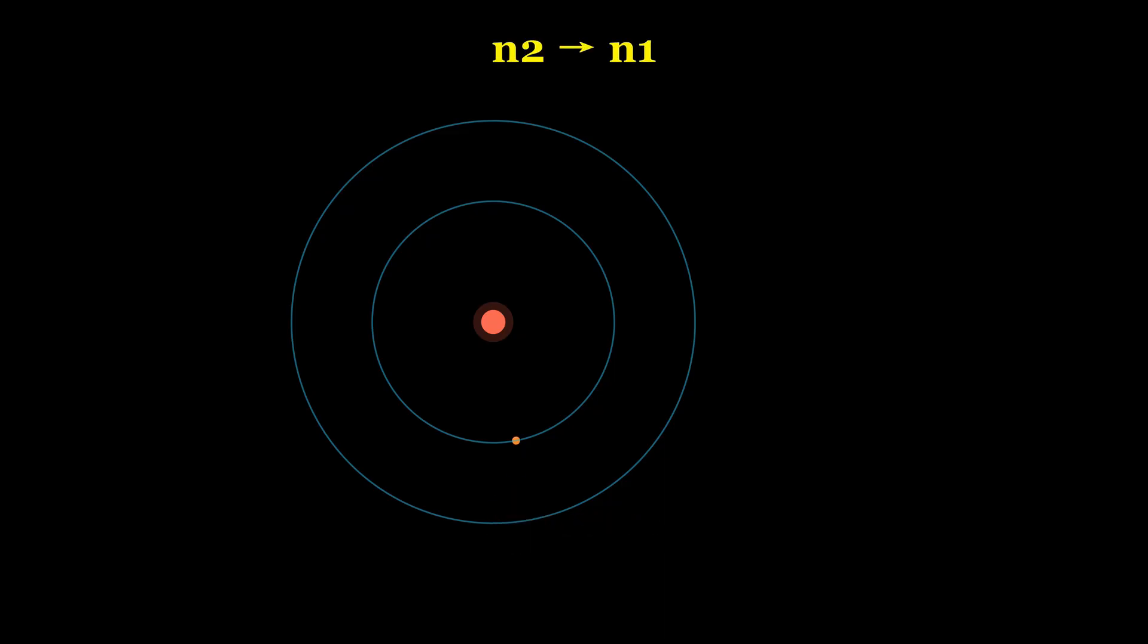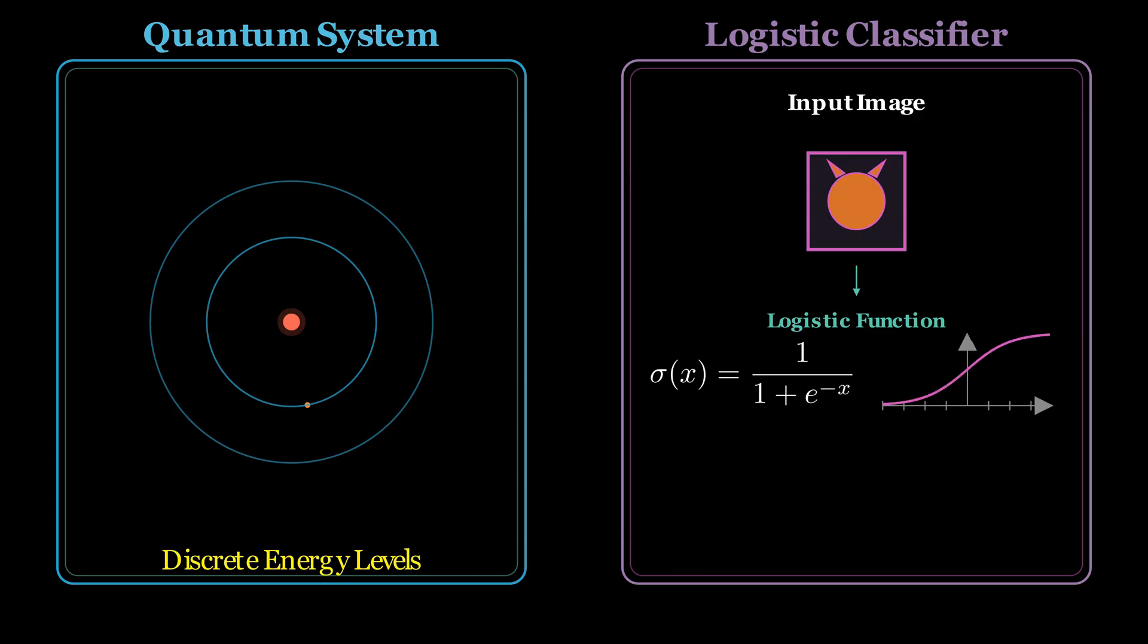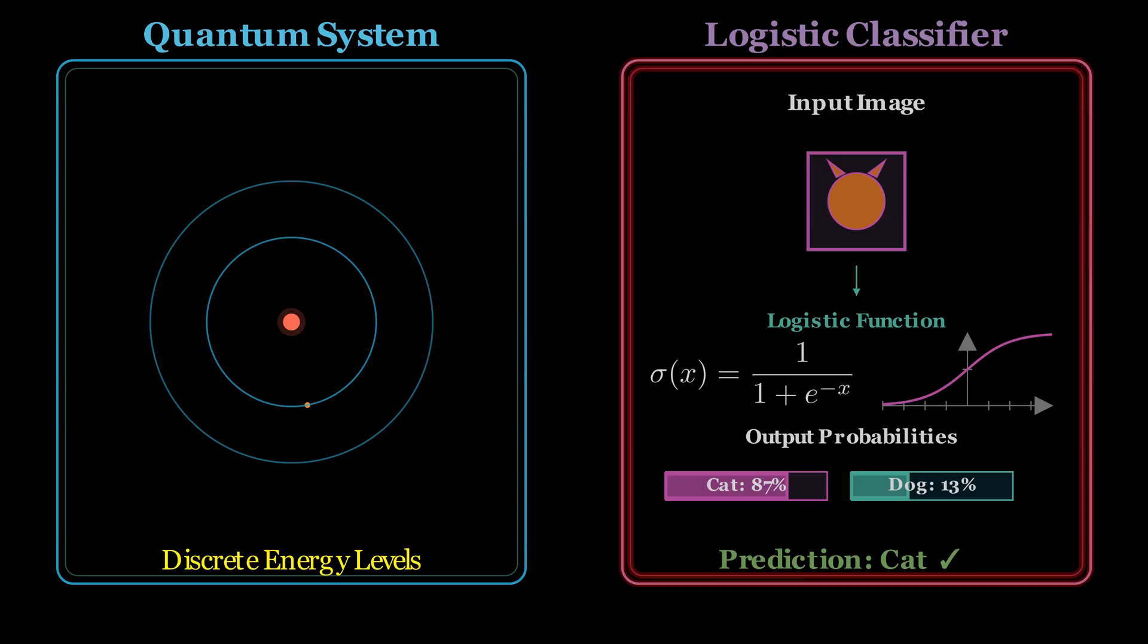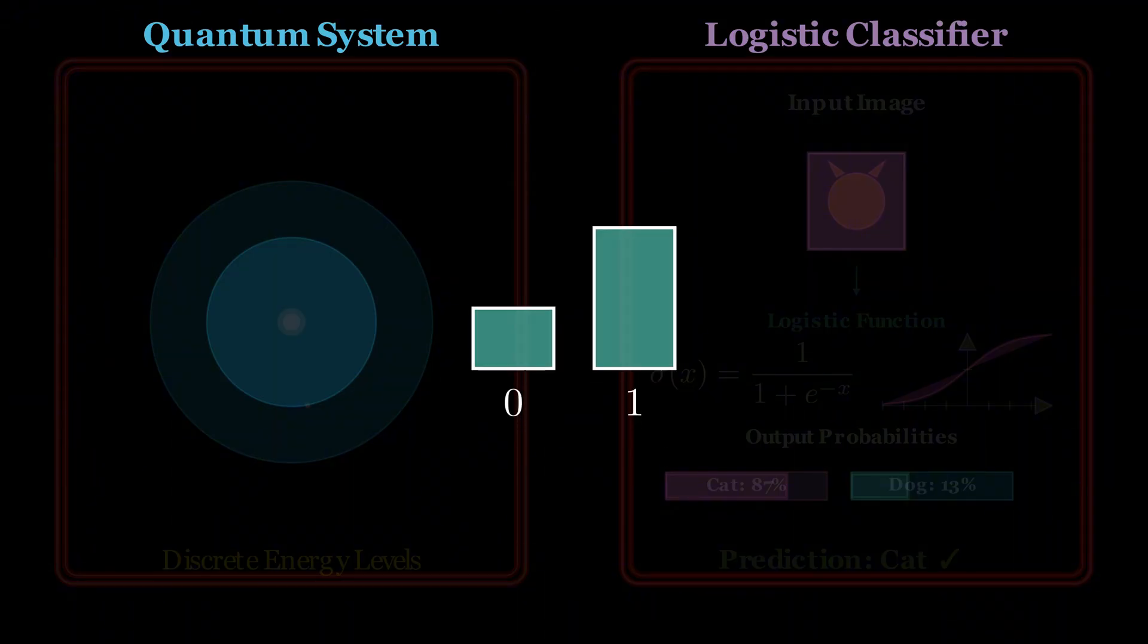Now, let me surprise you. This little quantum system – an electron transitioning between two energy states – is mathematically equivalent to one of the most used machine learning models – the logistic regression classifier, the same model that can tell apart pictures of cats and dogs. It sounds absurd at first. How can a hydrogen atom possibly relate to an algorithm trained on images? But as you'll see,